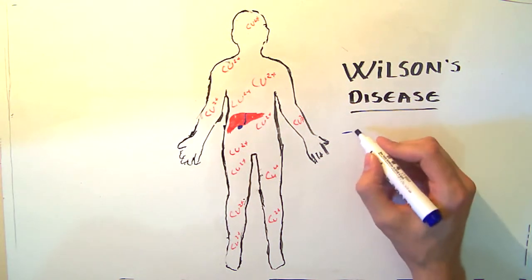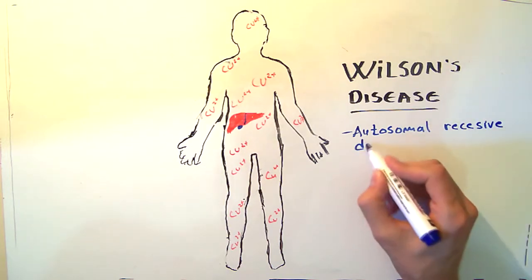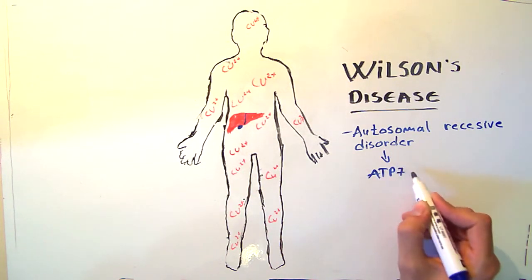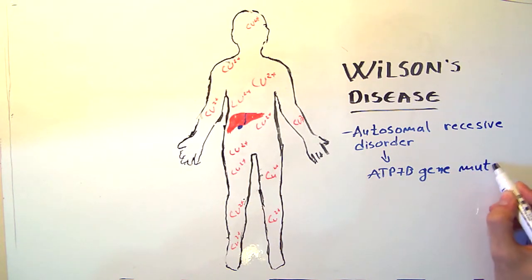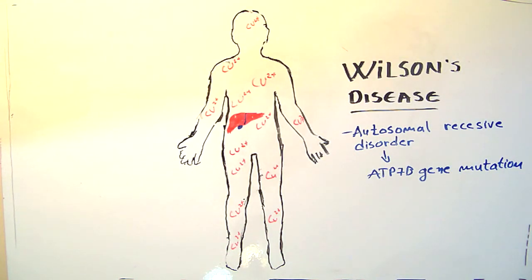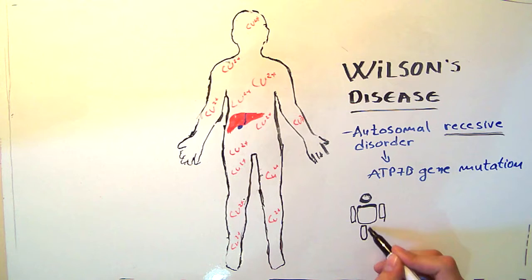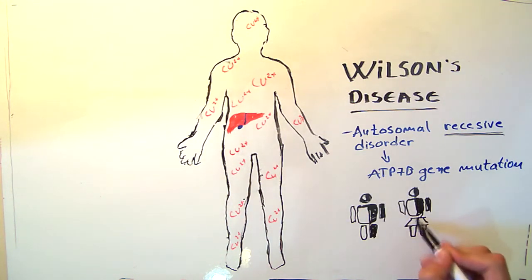Hello, today I'm going to talk about Wilson's disease. Wilson's disease is an autosomal recessive disorder caused by a mutation in the ATP7B gene. This gene is responsible for producing a membrane protein that helps the transportation of copper. Because the inheritance of this gene is recessive, it means that both parents need to be carriers of the mutated gene, so that their offspring presents with Wilson's disorder.